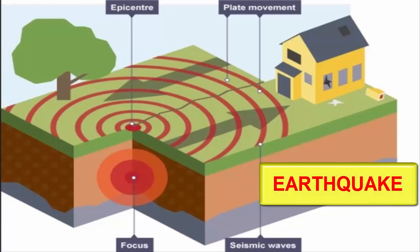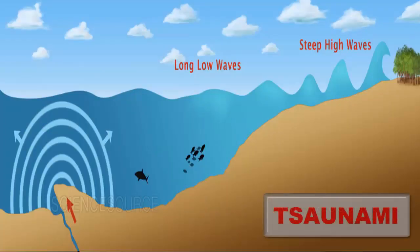The plates of the crust rub against one another, creating gigantic jerks deep under the earth, causing the surface to shake. This is called an earthquake. The earthquakes under the sea cause sea storms and are known as tsunami, which are very destructive as they hit the land.